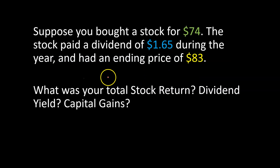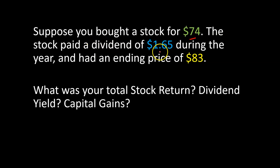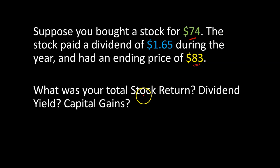Here is a very simple example to illustrate the point. Suppose you bought a stock for $74 per share. The stock then paid a dividend of $1.65 during the entire year and then had an ending price of $83. The question is: what was your total stock return, dividend yield, and capital gains?